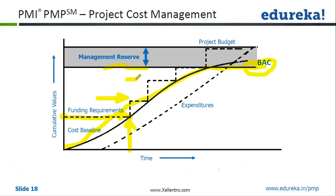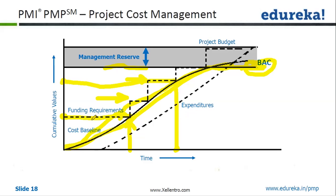Funding is done usually in steps, and these are the steps that we are seeing for funding. This is the point at which we do the funding for the project, and this is the cumulative value of that fund. Now essentially this is the budget — your BAC — this is the final value, your budgeted actual cost. Cost baseline will have budgeted actual cost as the highest point.